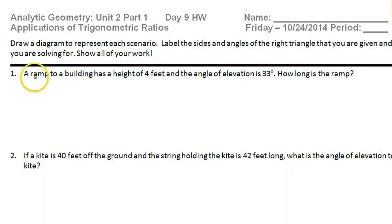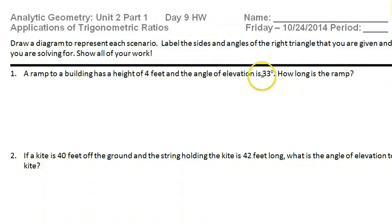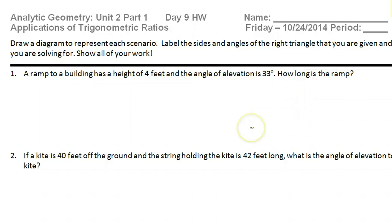Problem number one: a ramp to a building has a height of four feet and an angle of elevation of 33 degrees. How long is the ramp? It's all about the picture.